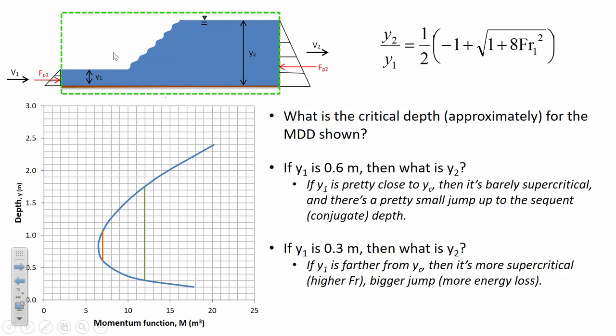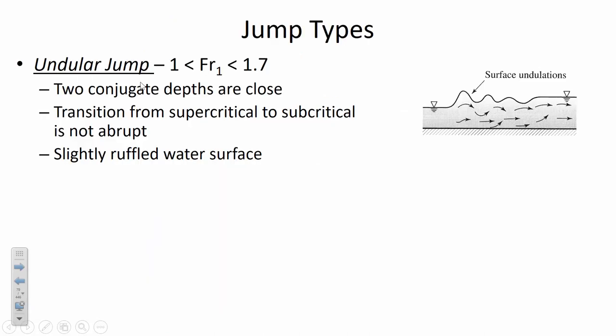Sometimes you barely even see the difference in elevation. In an undular jump, where the Froude number is just barely above one, you may not even notice you're having a hydraulic jump because the very gentle surface undulations look almost indistinguishable from ripples you'd ordinarily experience from gravel at the bottom of a channel. When you have a relatively low Froude number — above one but not very far above — you end up with a slightly ruffled water surface and are hardly losing any energy at all.